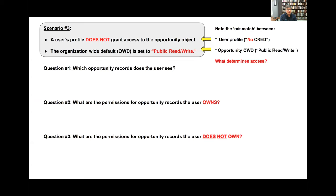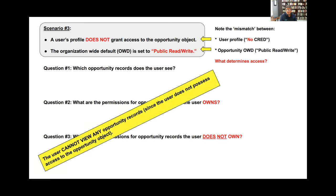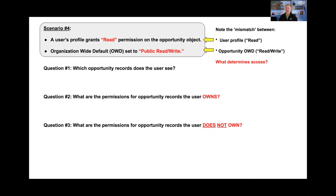Scenario three: the user's profile does not grant access to the opportunity object, and the OWD is set to public read/write. Question one - which opportunity records does the user see? Boone: none of them. Correct - they can't see anything, they don't even have access to the object. The next two people called - Tanner and Marciana - are still up for the next round.